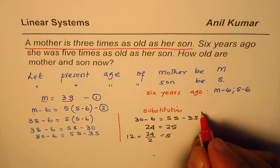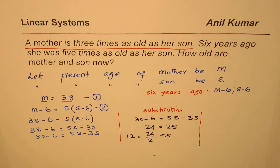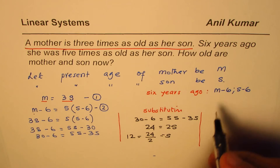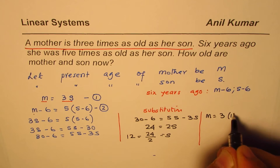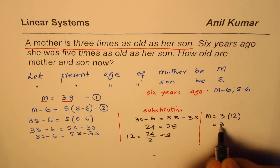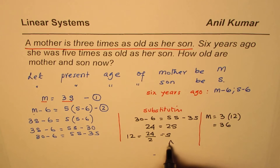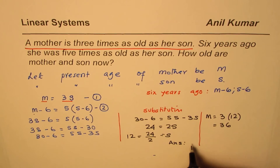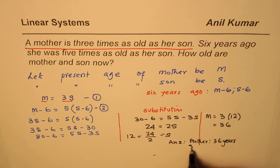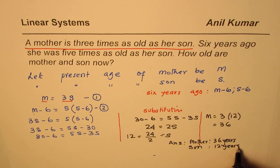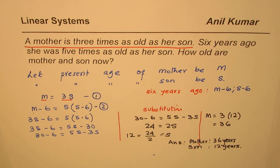Now let us find what mother's age is. We know mother's age is three times son's age. So mother's age will be three times 12, which is 36. That gives us the answer: mother is 36 years and son is 12 years. That is their present age.